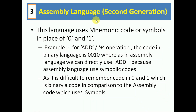The next topic is assembly language, which was used in the second generation of computers. This language uses mnemonic codes or symbols in place of zeros and ones. For example, for addition, the binary code would be 0010, whereas in assembly language you can directly use the keyword ADD.